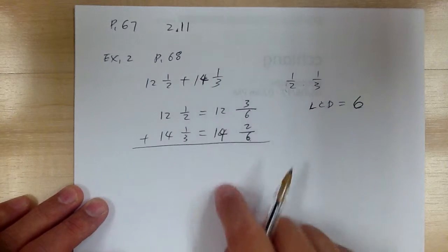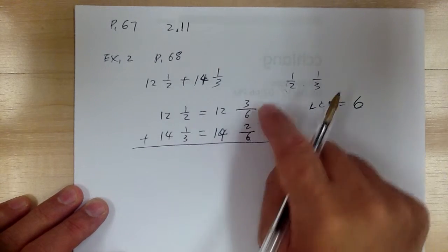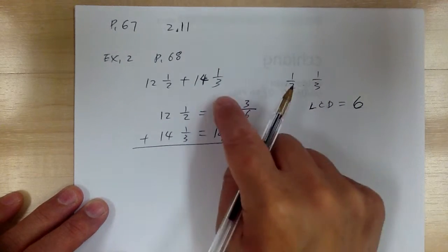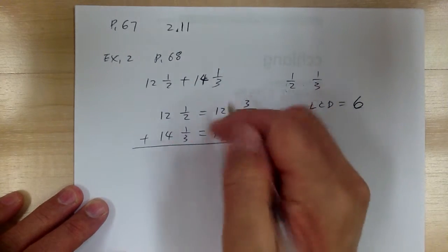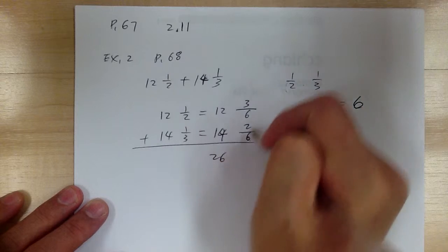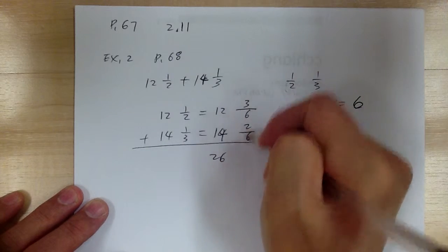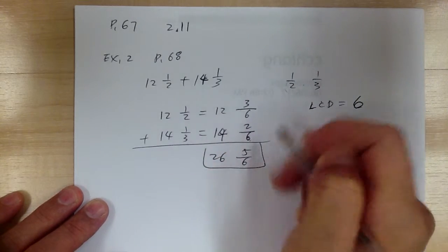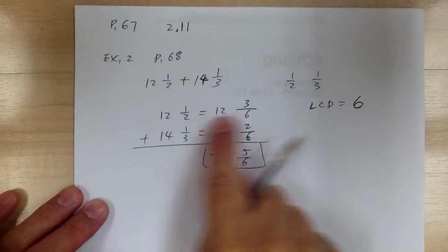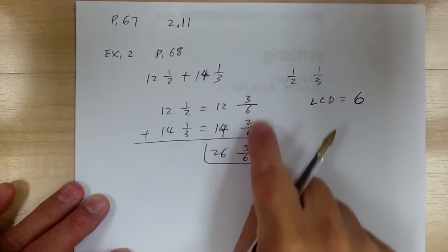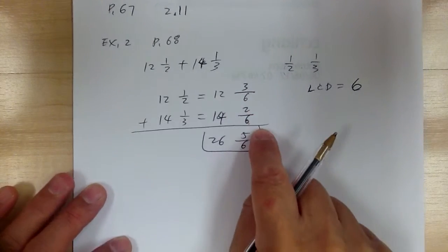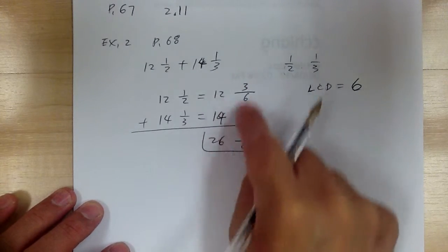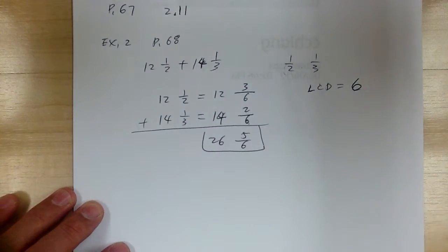After that, you can add the whole number and then add the fraction. So the whole numbers give you 26. When you add the fractions, you get 5 over 6. So go sideways to the common denominator, then add the whole numbers and add the fractions.